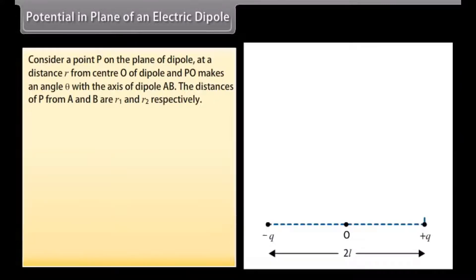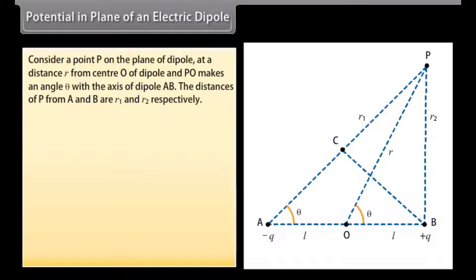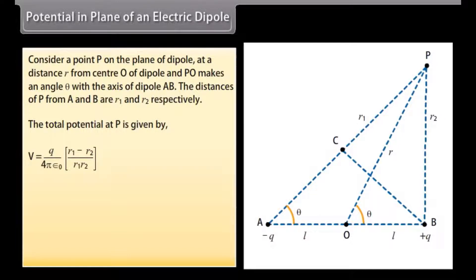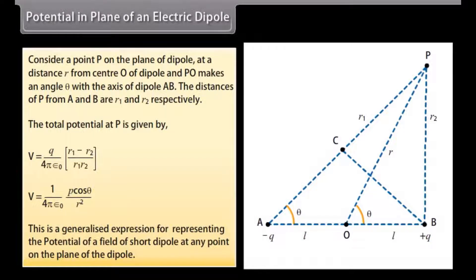Potential in the plane of an electric dipole: Consider a point P on the plane of the dipole at a distance R from the center O, where PO makes an angle theta with the axis of the dipole AB. The distances of P from A and B are R1 and R2 respectively. The total potential at P is given by V equals Q upon four pi epsilon naught multiplied by R1 minus R2 upon R1 R2, which equals one upon four pi epsilon naught multiplied by P cos theta upon R squared. This is a generalized expression for the potential of a short dipole at any point on the plane of the dipole.